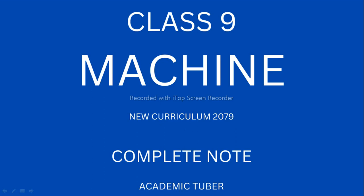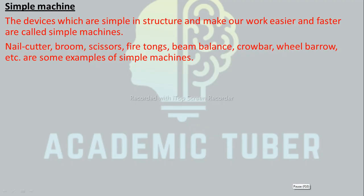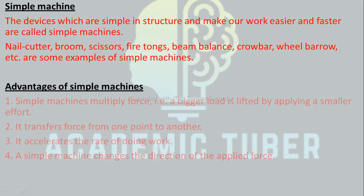Simple Machines. We use different devices in our daily life to perform various types of work. Different machines and instruments are frequently used to make our work easier, faster, and convenient. For example, we use scissors to cut papers, pliers during electric work, etc. Those devices which are simple in structure and make our work easier and faster are called simple machines. Nail cutter, broom, scissor, fire tongs, beam balance, crowbar, wheelbarrow, etc. are some examples of simple machines.